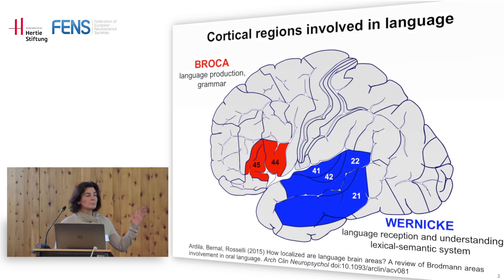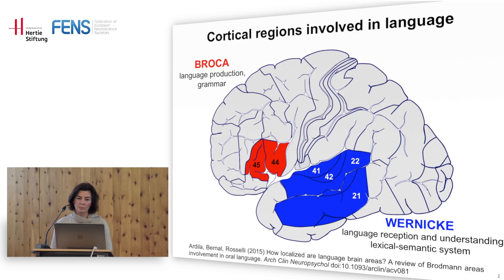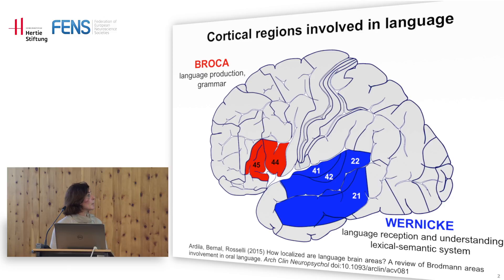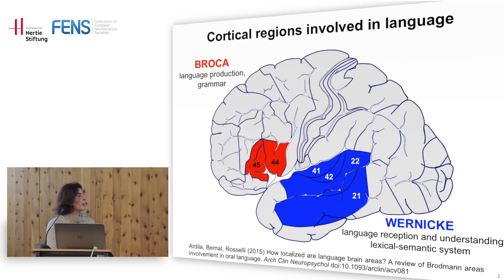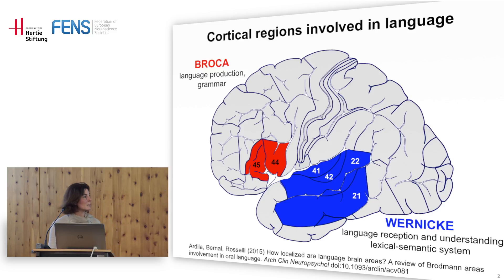There are basically two regions involved in language. The frontal speech region was described as early as 1861 by Broca, and it consists of areas 44 and 45, and the posterior one is Wernicke, and that was described 10 years later in 1871.